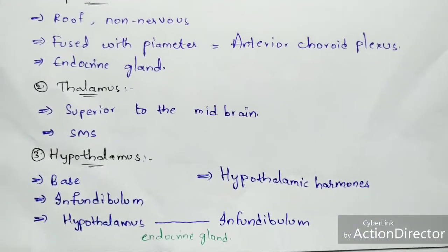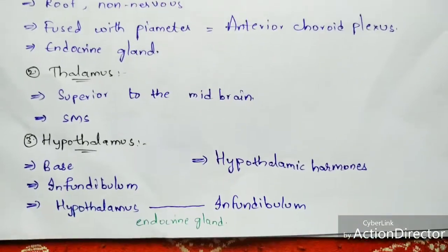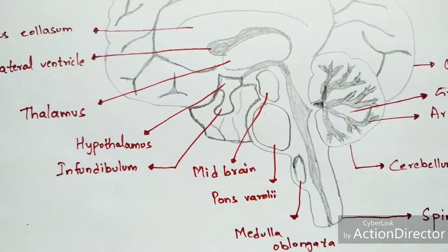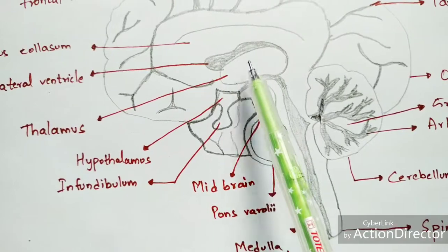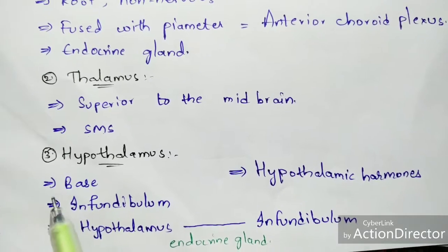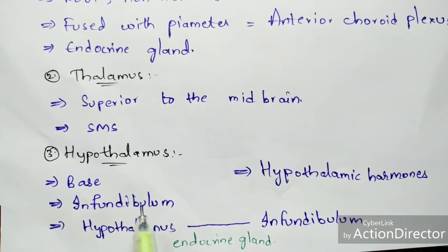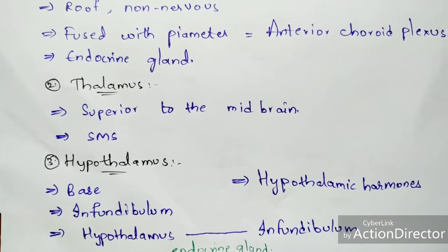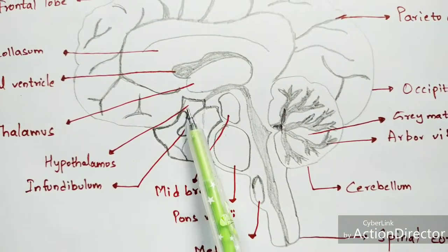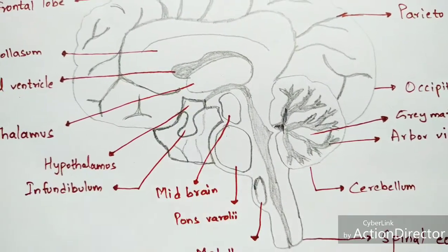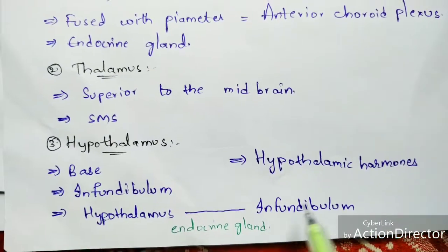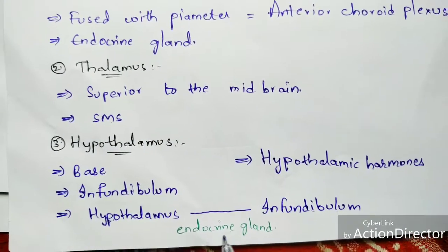The hypothalamus is the third region of the diencephalon, present just below the thalamus. From the hypothalamus, the infundibulum arises, which is a funnel-shaped structure. The hypothalamus and infundibulum are connected with the pituitary gland, an endocrine gland.